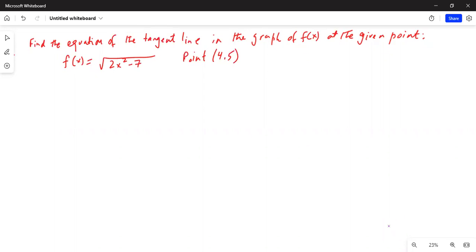Find the equation of the tangent line in the graph of f(x) at the given point. f(x) is given as square root of 2x squared minus 7. And the given point is (4, 5). So x is 4, y is 5 for the given point. So let's do this problem.